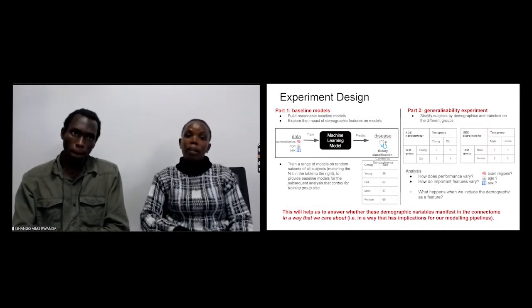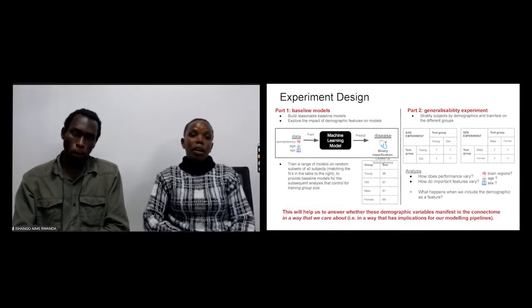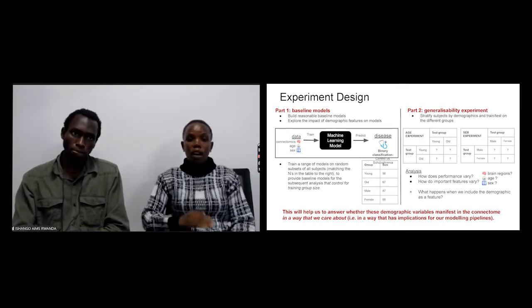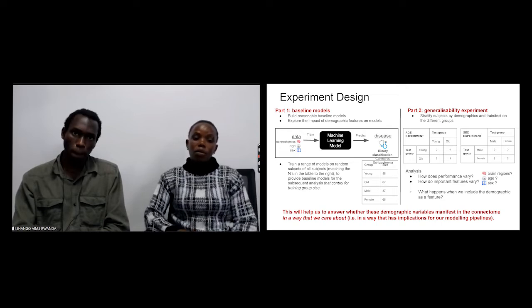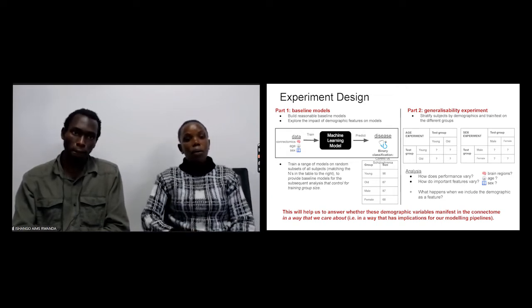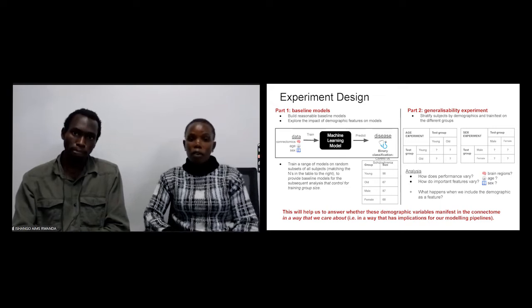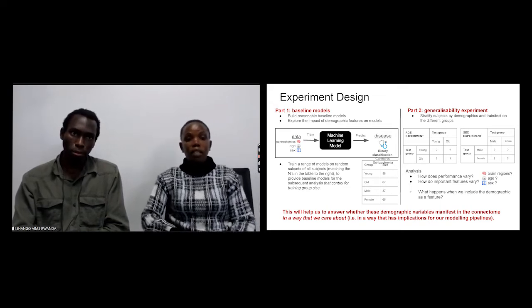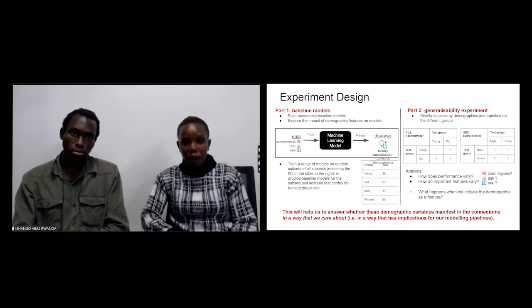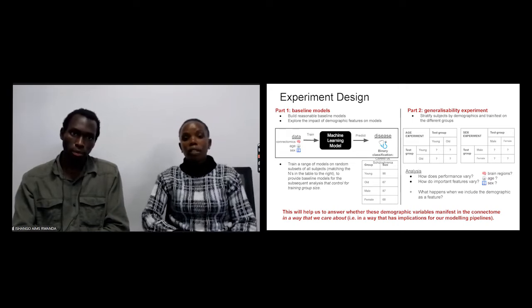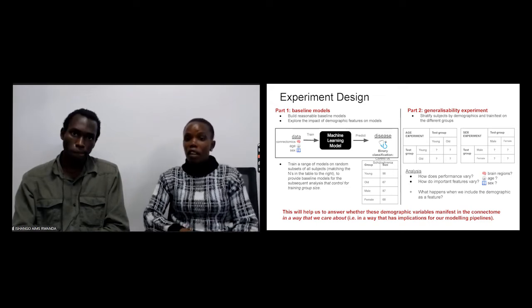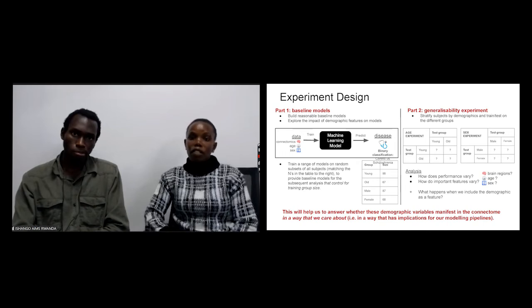Our experiment design was in two parts. The first part is where we built a reasonable baseline model and trained it on our whole datasets using random sets of subsets to see how the model performs and how these confounders impact our models. Then the second part is how we see how it generalizes on imbalanced data.